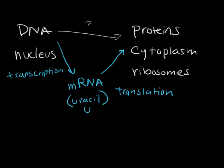In the last video we talked about DNA replication and also the process of transcription, where you get mRNA — messenger RNA — from DNA, which is made in the nucleus. Then you send that messenger RNA to the cytoplasm, to the ribosomes, which then make proteins. This process is called translation, and today we're going to talk about translation.